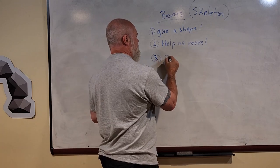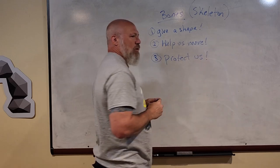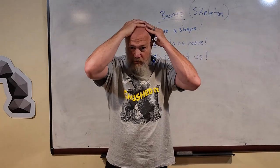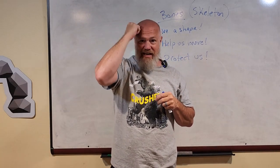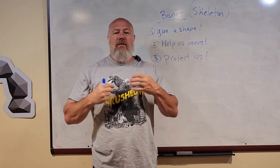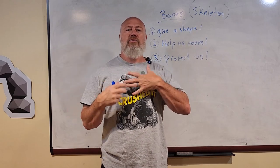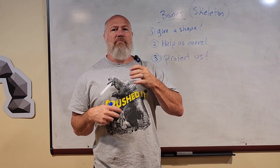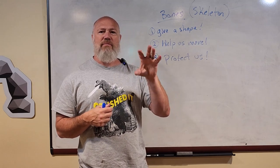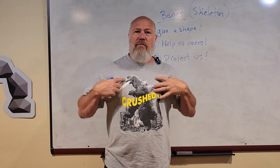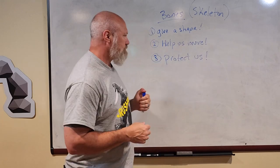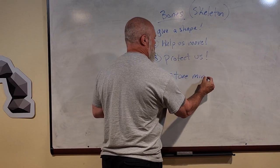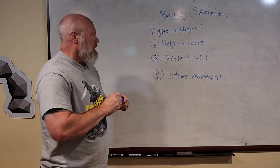Bones also protect us — they're like armor. My hard bony helmet, the skull, protects my brain. My jaw protects my neck, and my chest bone and ribs protect my lungs and heart. Your heart is the muscle you can feel pumping when you put your hand on your chest — bump bump bump. Your breastbone and rib cage help protect it so you don't get hurt.